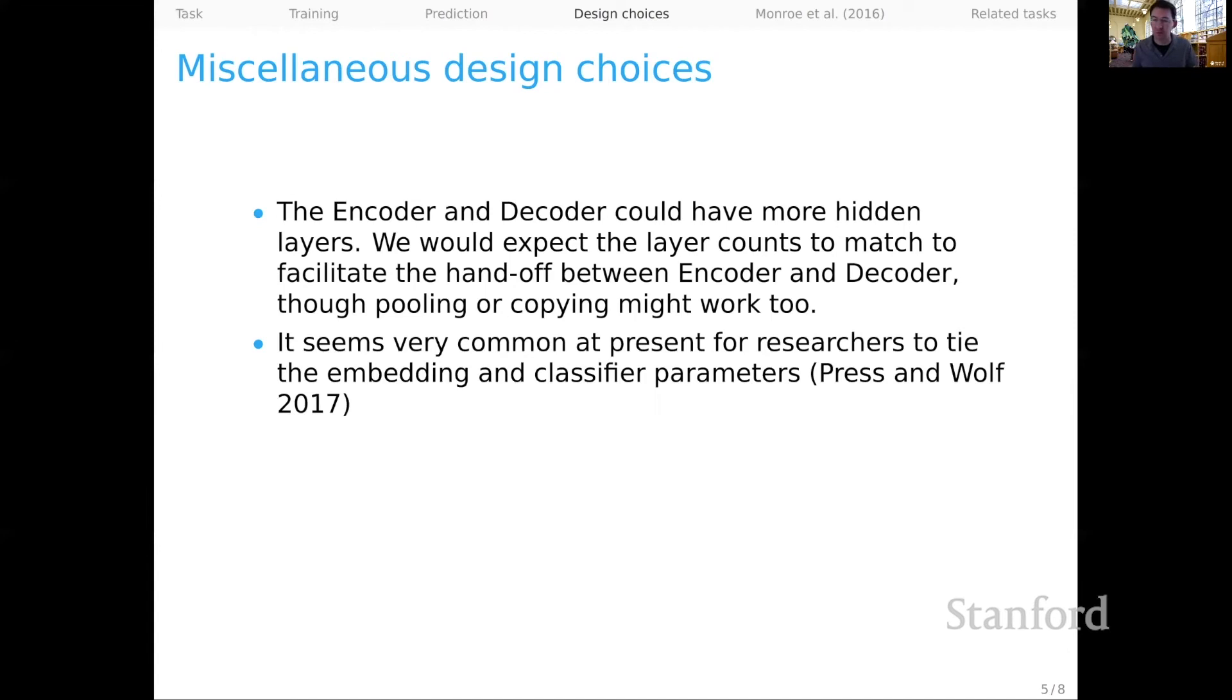It's very common at present for researchers to tie the embedding and classifier parameters. The embedding gives us a representation for every vocabulary item. And the transpose of that can serve as the set of parameters for our softmax classifier when we predict tokens. And tying those weights seems to be very productive in terms of optimization effectiveness. So you might consider that.